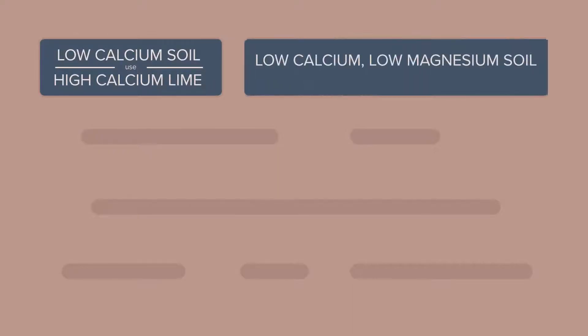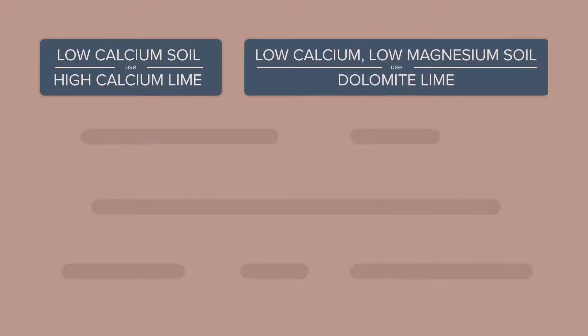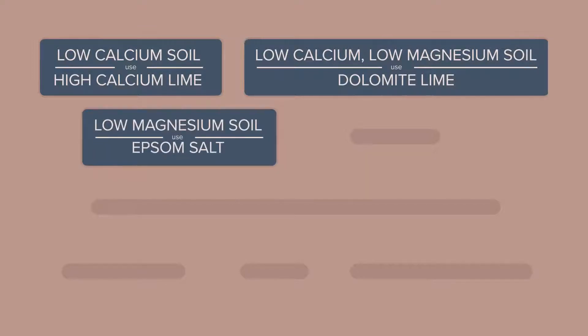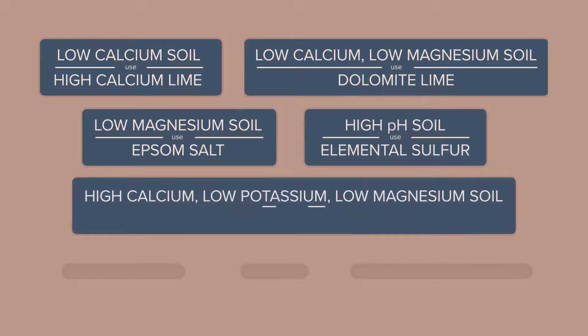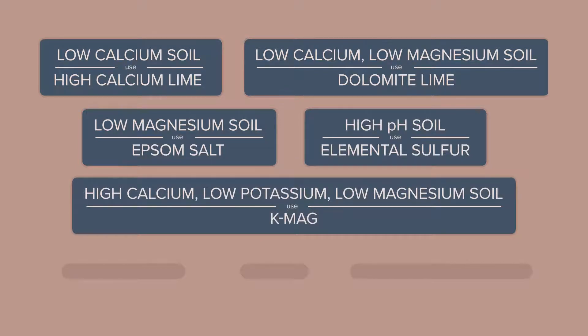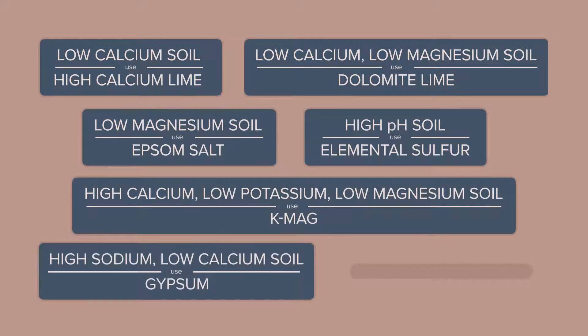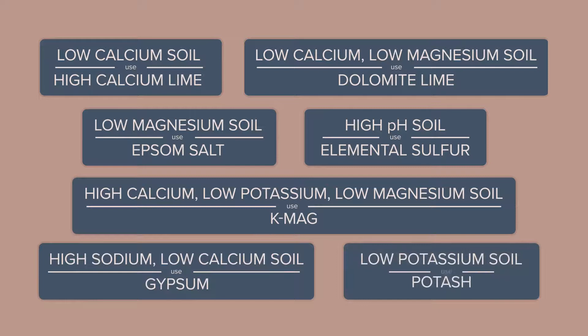It's critical that you apply the correct soil amendment for that specific cation that may be out of balance. If you're low in calcium, apply a high calcium lime. For soils low in both calcium and magnesium, switch to a dolomite lime. Low magnesium can be addressed with Epsom salts. In high pH situations, elemental sulfur works well at stripping cations and replacing them. In high calcium soils where you need both potassium and magnesium, K-mag is an excellent source. In areas with high sodium and low calcium, gypsum is a good source.